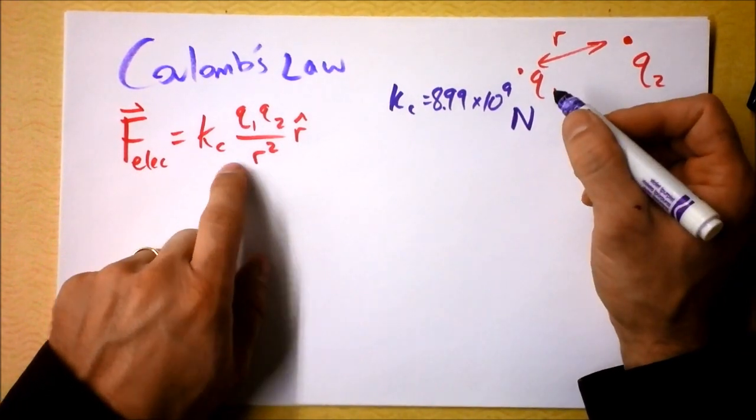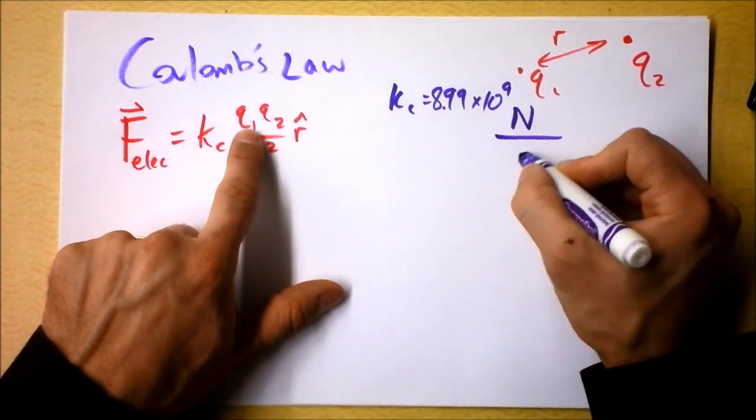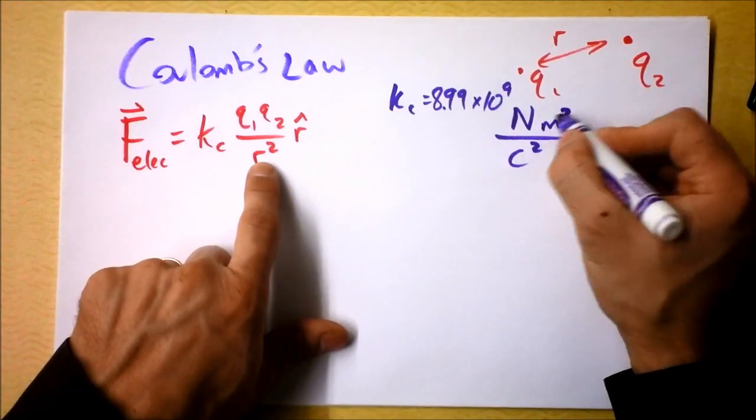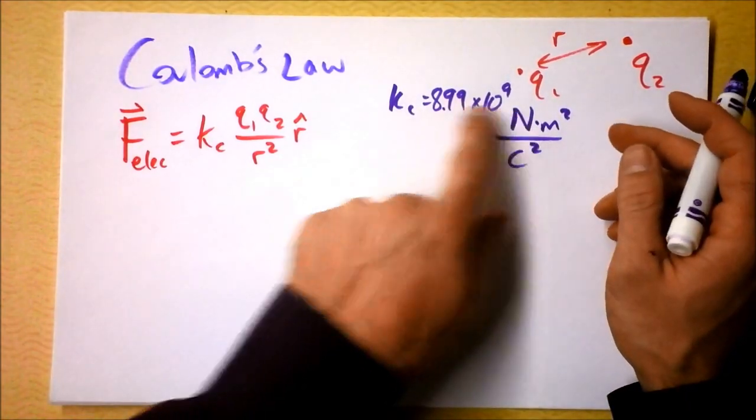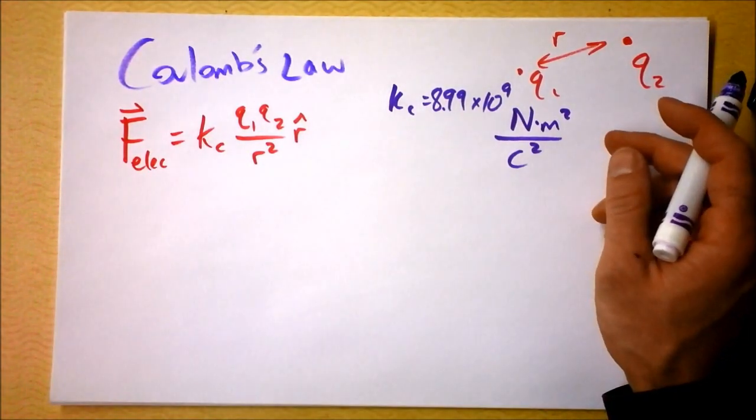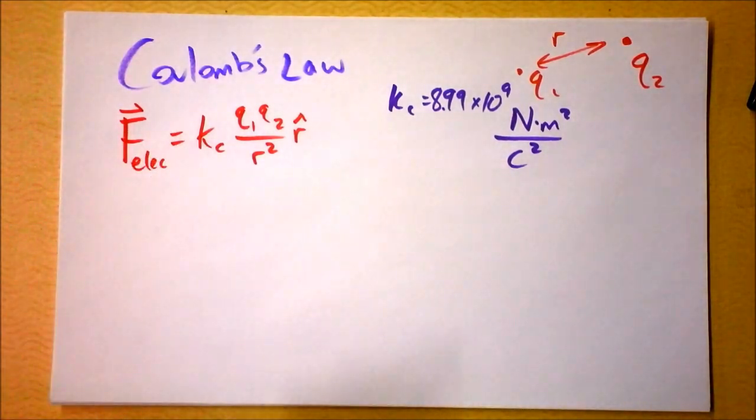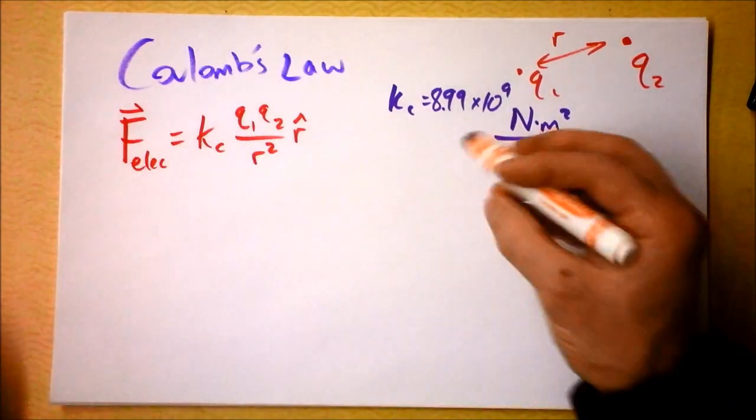So it's gonna have newtons here, then we're gonna have to divide by coulombs squared, it's a capital C, and then we're gonna have to multiply by meter squared over here to get ourselves back into newtons when we're all finished. And I'm thinking that this force looks a lot like another force that I know. So, here we go.